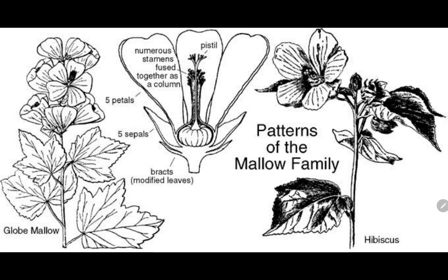Very interestingly, you will find it is monadelphous, meaning all the stalks of the anthers are fused into one filament. You can also see this flower is actinomorphic — you can call it radial symmetry — meaning you can divide this flower into two equal parts from any plane passing through it.